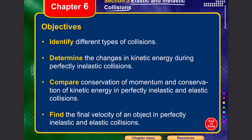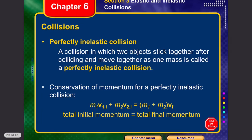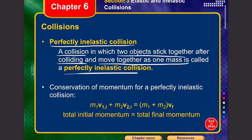Now let's cover elastic and inelastic collisions. A perfectly inelastic collision is one where two objects stick together after colliding and move as one combined mass. An example is a train engine coupling to a train car — once joined, they become a single unit traveling at a single velocity.